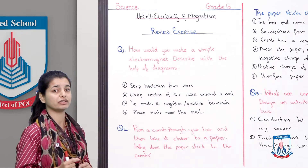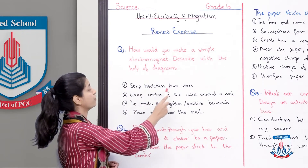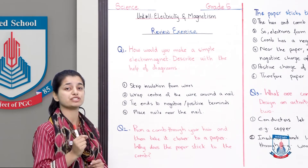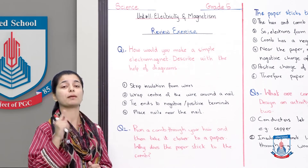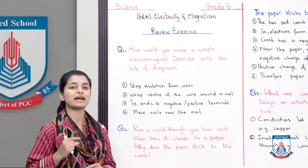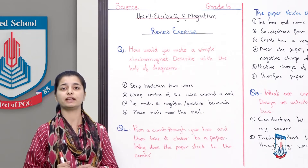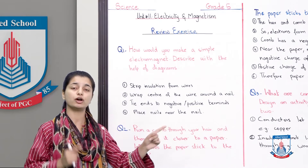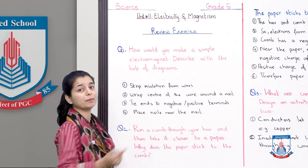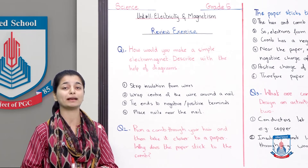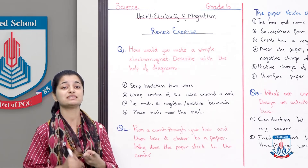Let's study the steps once again briefly. First, strip the insulation from the wires. Second, wrap the center of the wire around the nail, leaving a little wire on each end. Third, tie the ends to the negative and positive terminals. Finally, bring nails or paper pins close and see if the electromagnet is working. This procedure has been explained in your book and in the other lesson. Now, in your own words, describe it in your notebook.